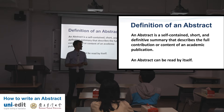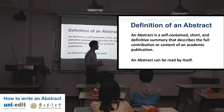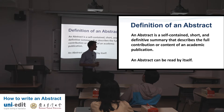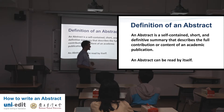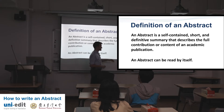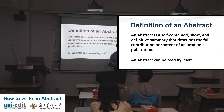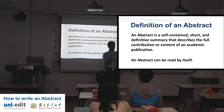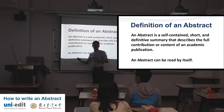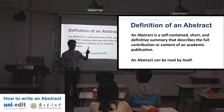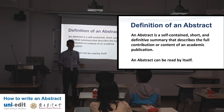An abstract is a self-contained, short, and definitive summary that describes the full contribution or content of an academic publication. An abstract can be read by itself. It's difficult to take your entire presentation and put it into a small paragraph. You spend hours and hours writing 20, 30, 40 pages, and then you need one paragraph for the whole thing. That's hard — that's why we're doing this today.